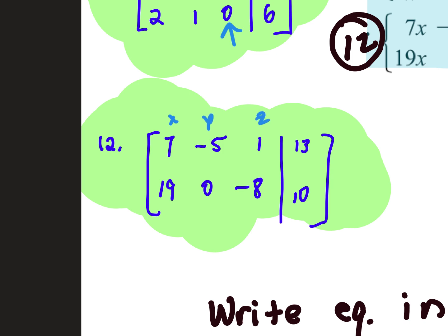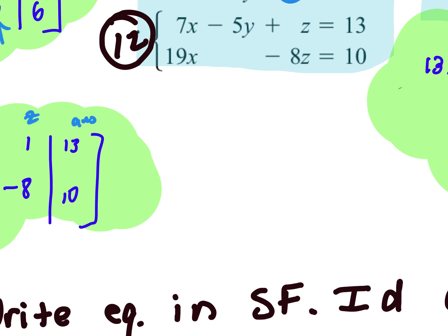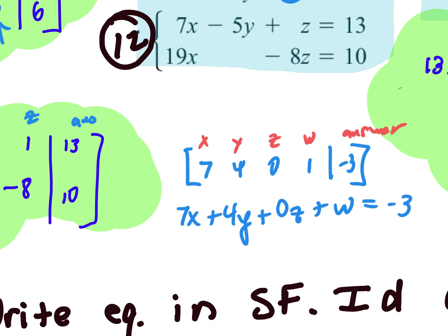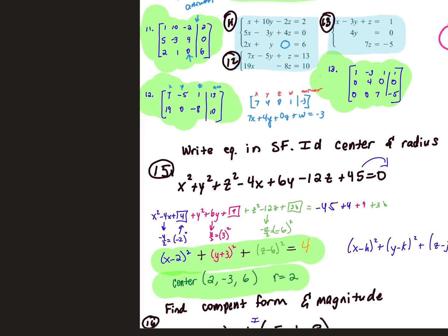So what I mean by that is like, say you had something like this, like 7, 4, 0, 1, then your answer over here, negative 3. This would be 7X plus 4Y plus 0Z, if you want to write it, and then plus 1W. Whatever the fourth variable is, they always use W. So it should start with X, Y, Z, W, and then your answer. Just if you see that, it's good to know.